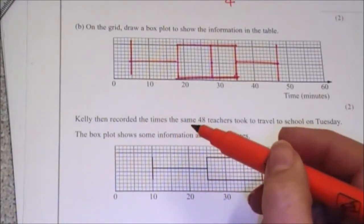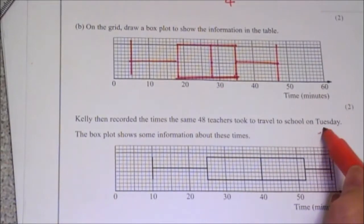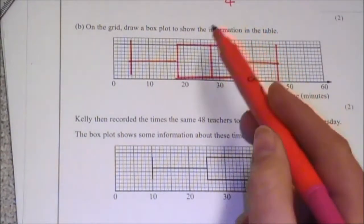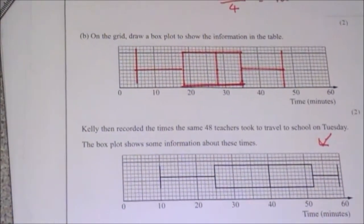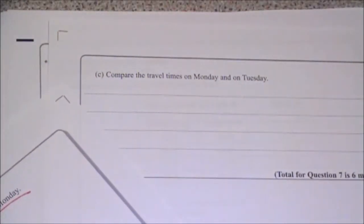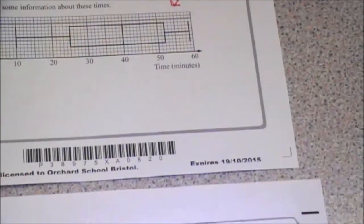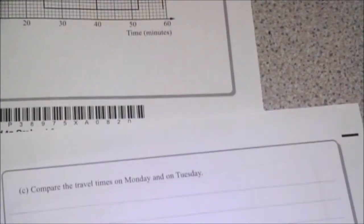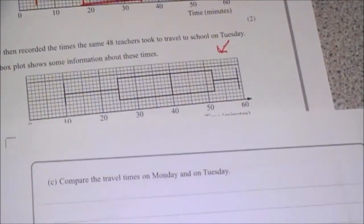The next question says Kelly then recorded the times the same 48 teachers took to travel to school on Tuesday — so this is now about Tuesday; that was Monday. The box plot shows some information about these times. Part C wants you to compare the travel times on Monday to Tuesday.